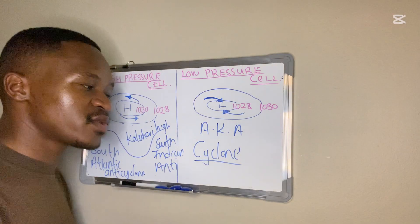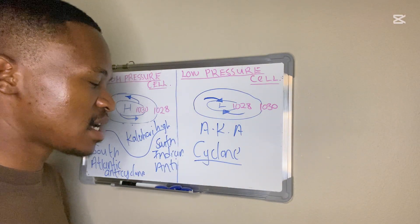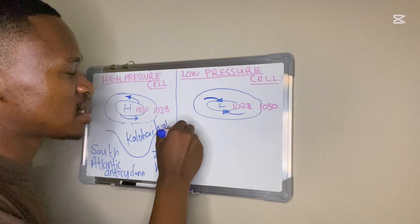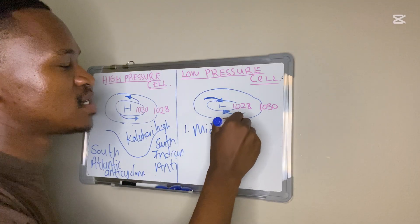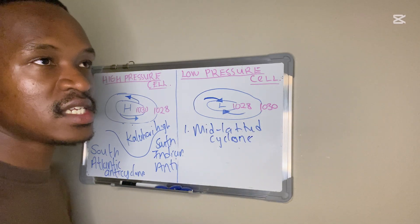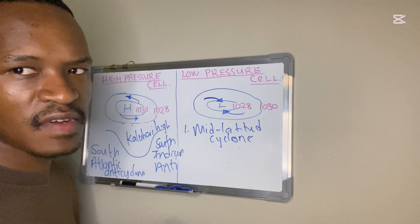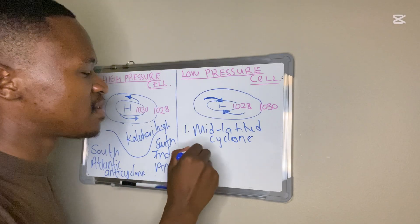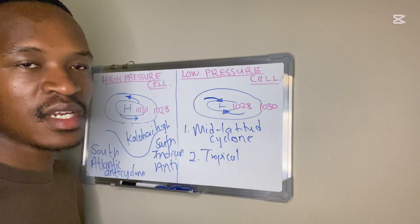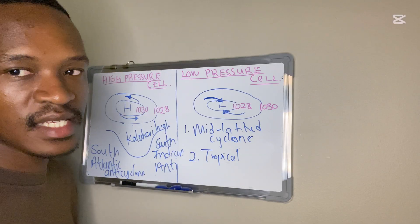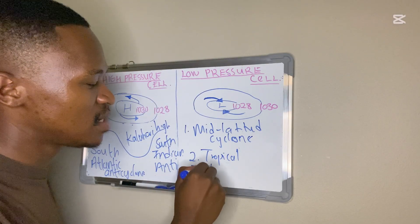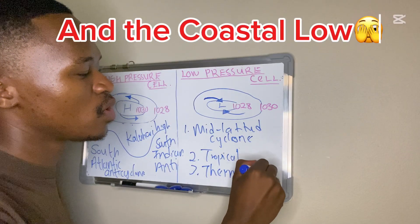A low pressure cell is also known as a cyclone. Two cyclones covered in matric are: the mid-latitude cyclone, which occurs between 30 and 60 degrees and is driven by the westerlies; and the tropical cyclone, found between 5 and 30 degrees north or south, driven by the tropical easterlies. Another low pressure cell is the thermal low, also called the heat low.